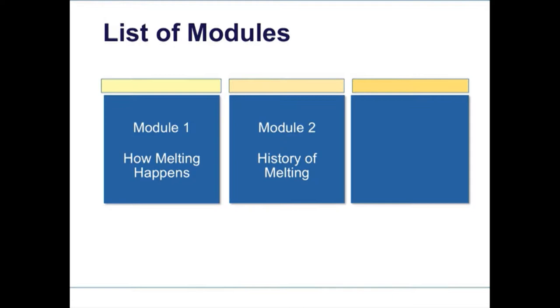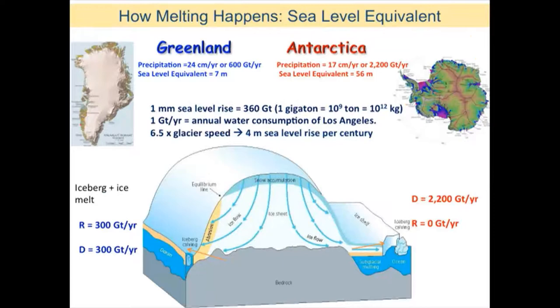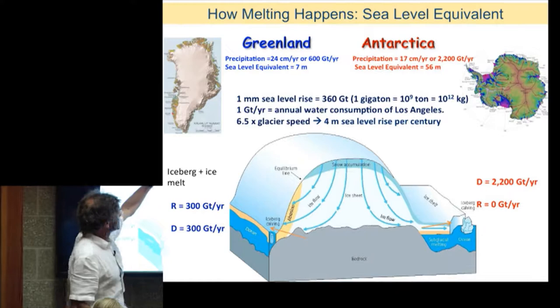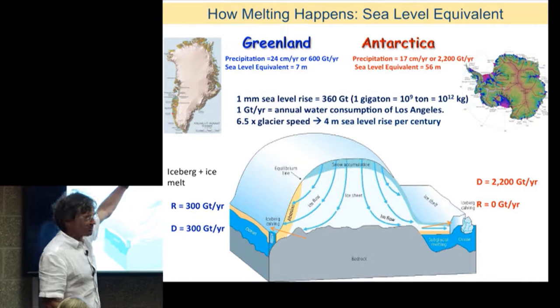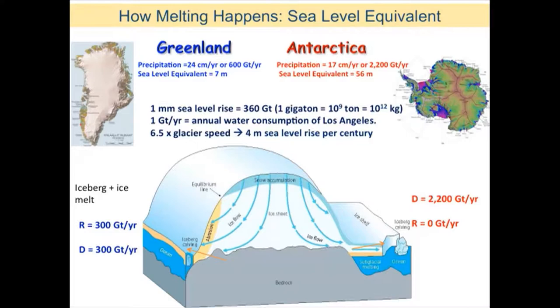The first topic is melting — how melting happens on the ice sheets. We have Greenland and Antarctica locking up most of the fresh water on Earth. If we were to melt all of the ice on Greenland, we would raise sea level by seven meters. Antarctica: 56 meters globally. In terms of precipitation, 24 centimeters per year in Greenland, 17 in Antarctica — they are deserts by world standards.